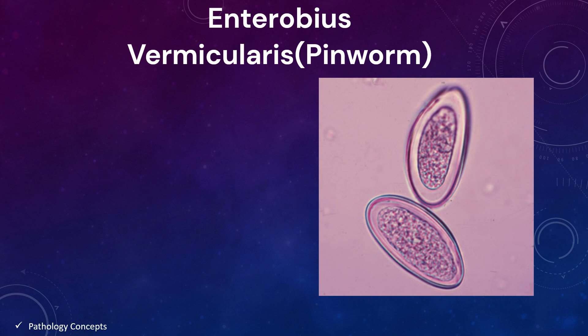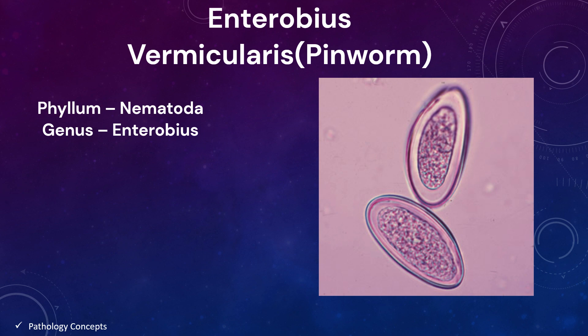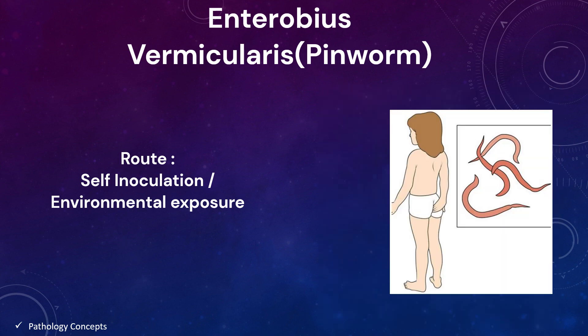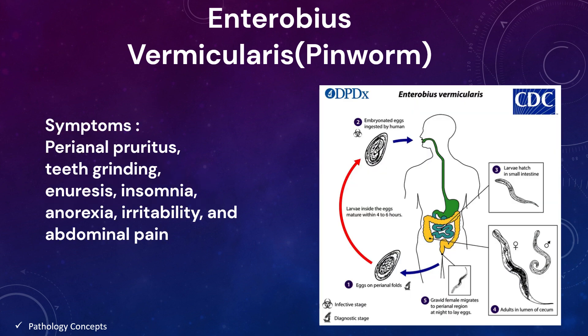First is Enterobius vermicularis, also known as pinworm. The phylum is Nematoda, genus is Enterobius. The route of infection is the gravid adult female, which deposits eggs in the perianal fold of an infected person. Infection occurs via self-inoculation or through exposure to eggs in the environment. Self-inoculation occurs by transferring eggs to the mouth with hands that have scratched the perianal area.